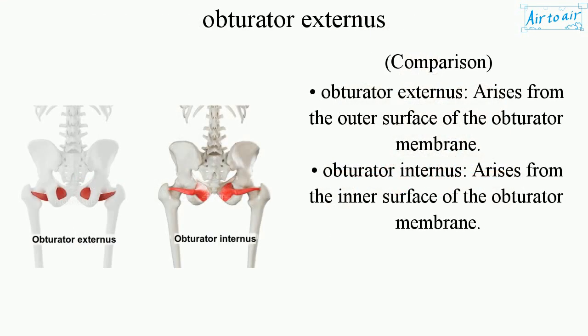Comparison: obturator externus arises from the outer surface of the obturator membrane, while obturator internus arises from the inner surface of the obturator membrane.